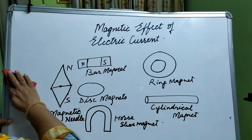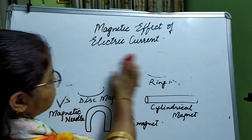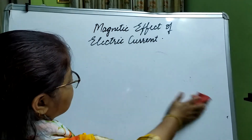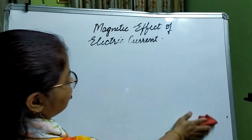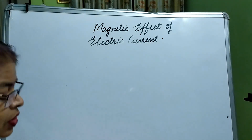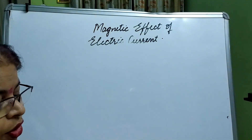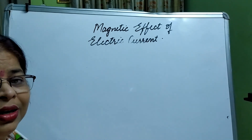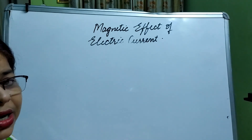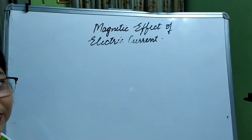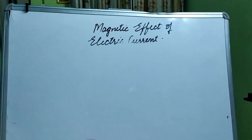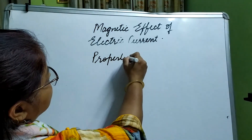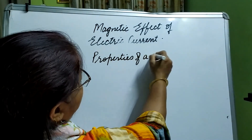Now, why are we studying about all these magnets when the chapter is related to electric current? Because when current flows through a conductor, it attains magnetic properties. That is why we need to understand magnets first. So let us quickly learn about the properties of a magnet.